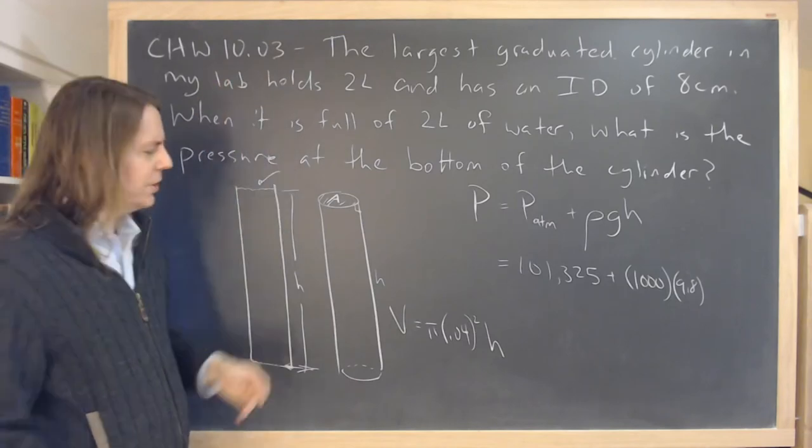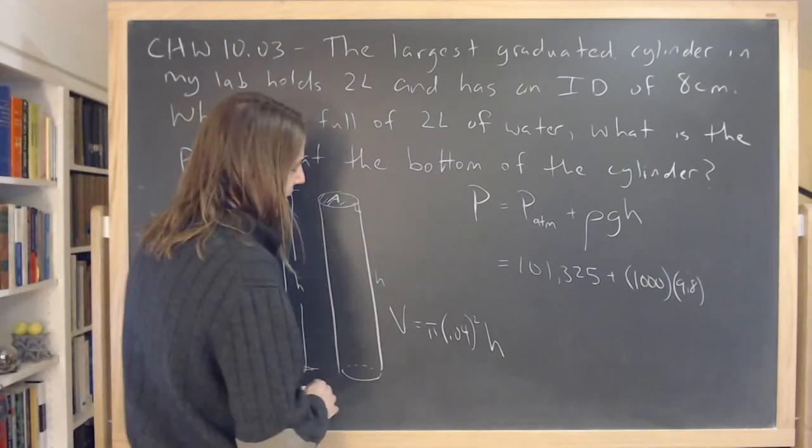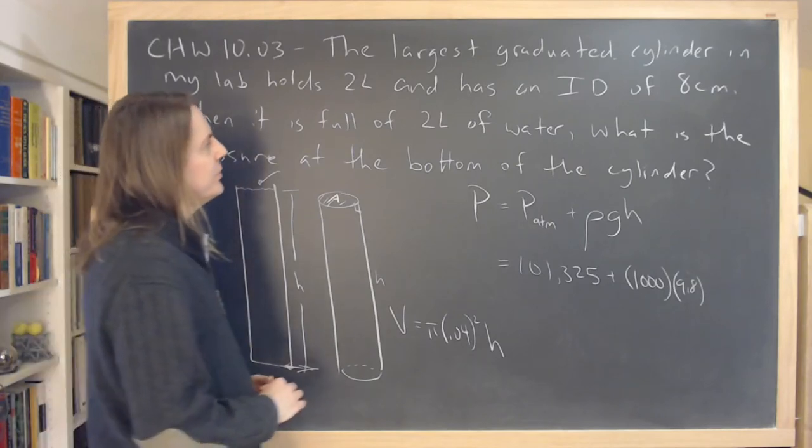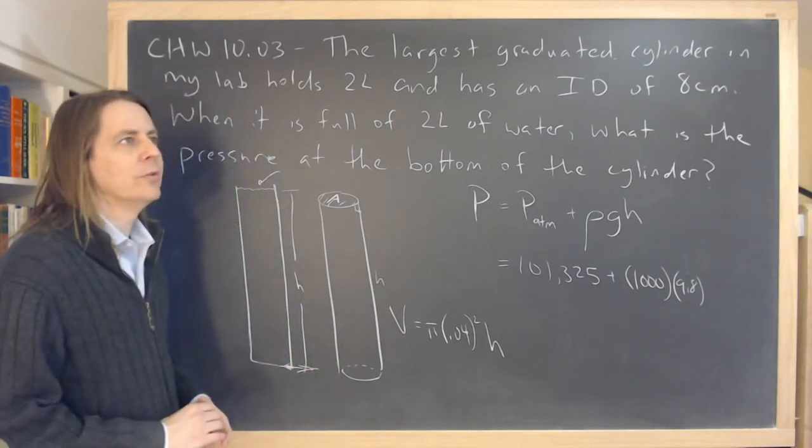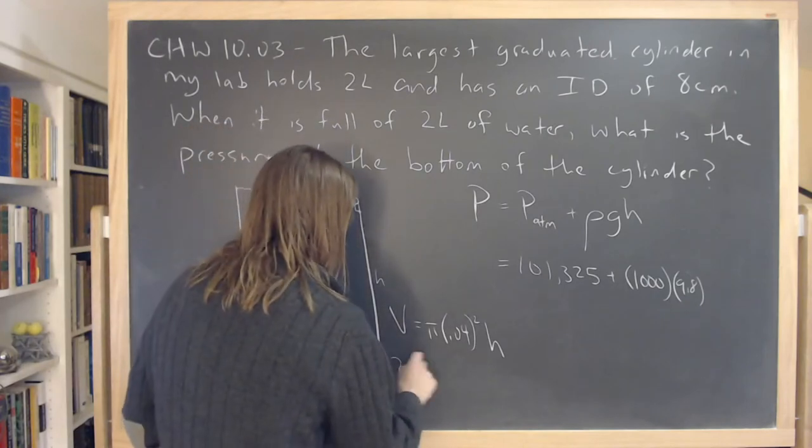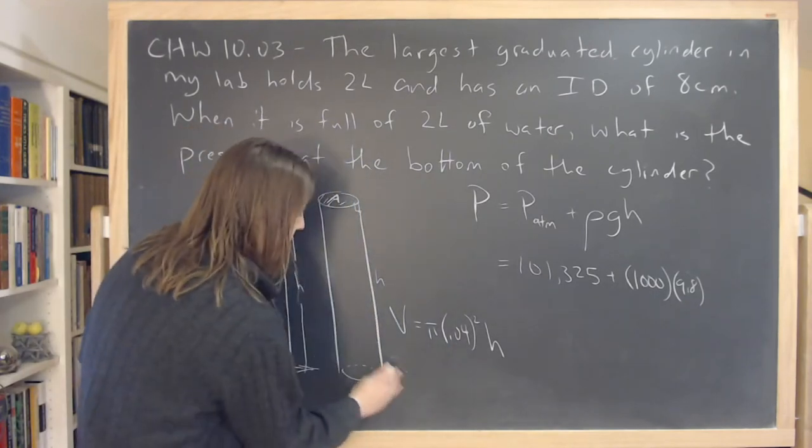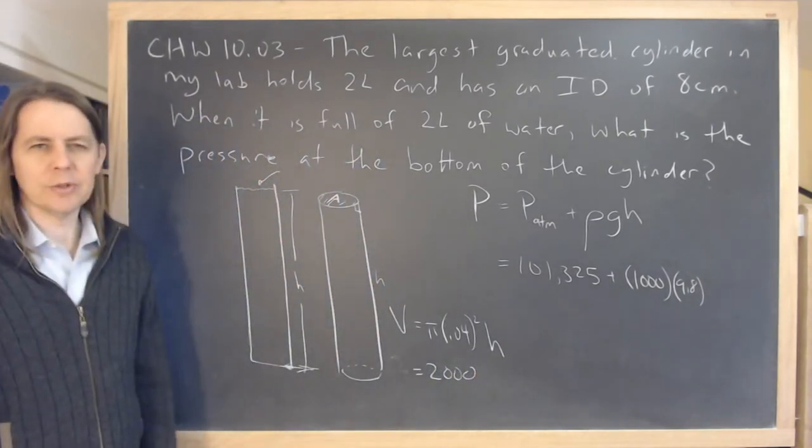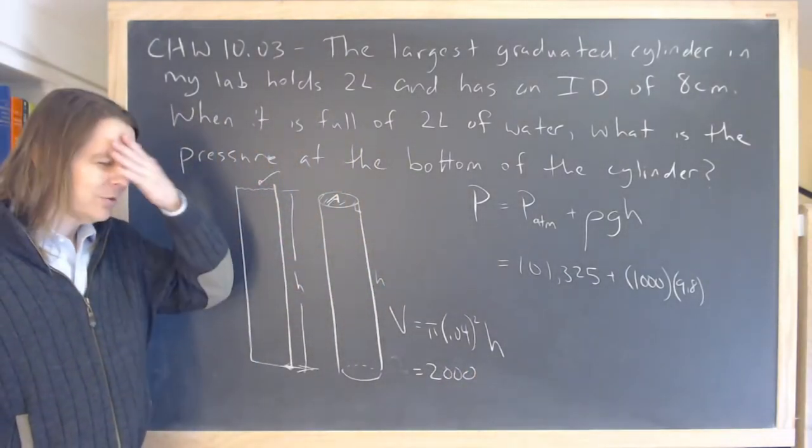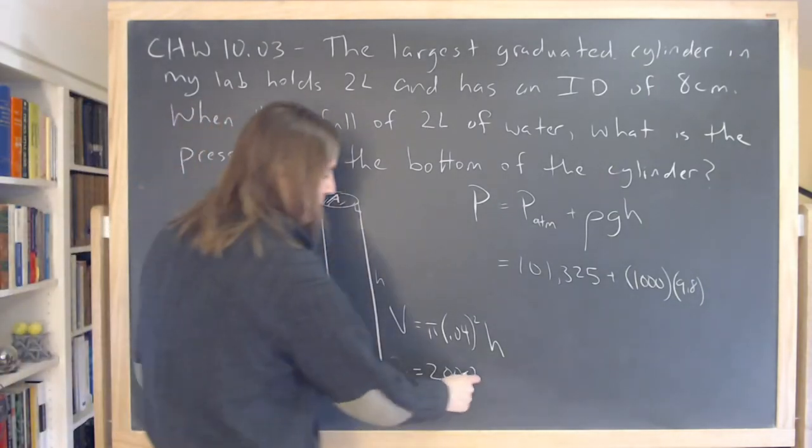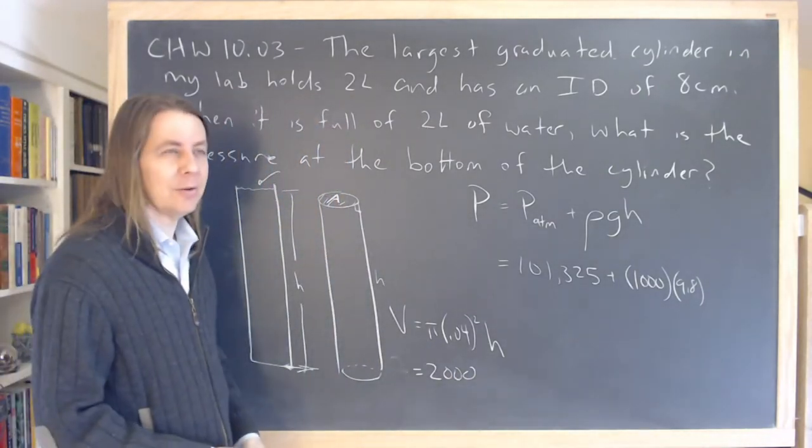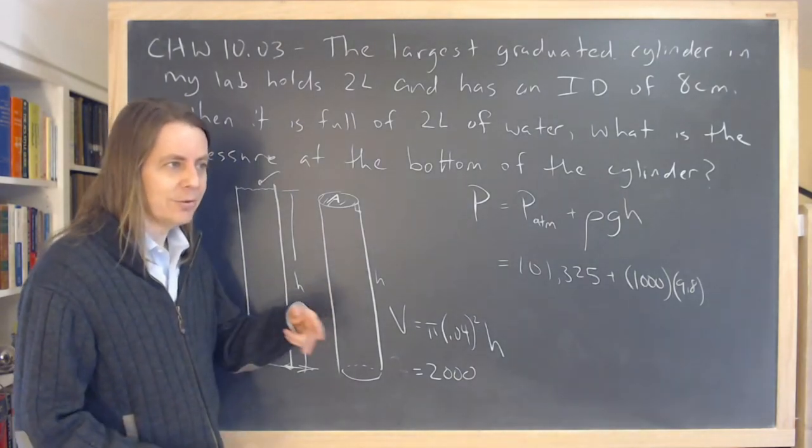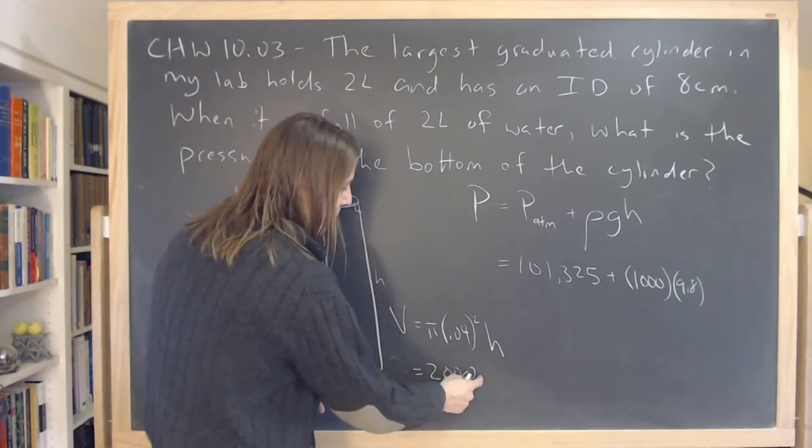We do, 2 liters. So we've got to convert 2 liters into MKS volume, which we can do. Let's see, so 2 liters is 2,000 milliliters. So that equals 2,000 centimeters cubed.